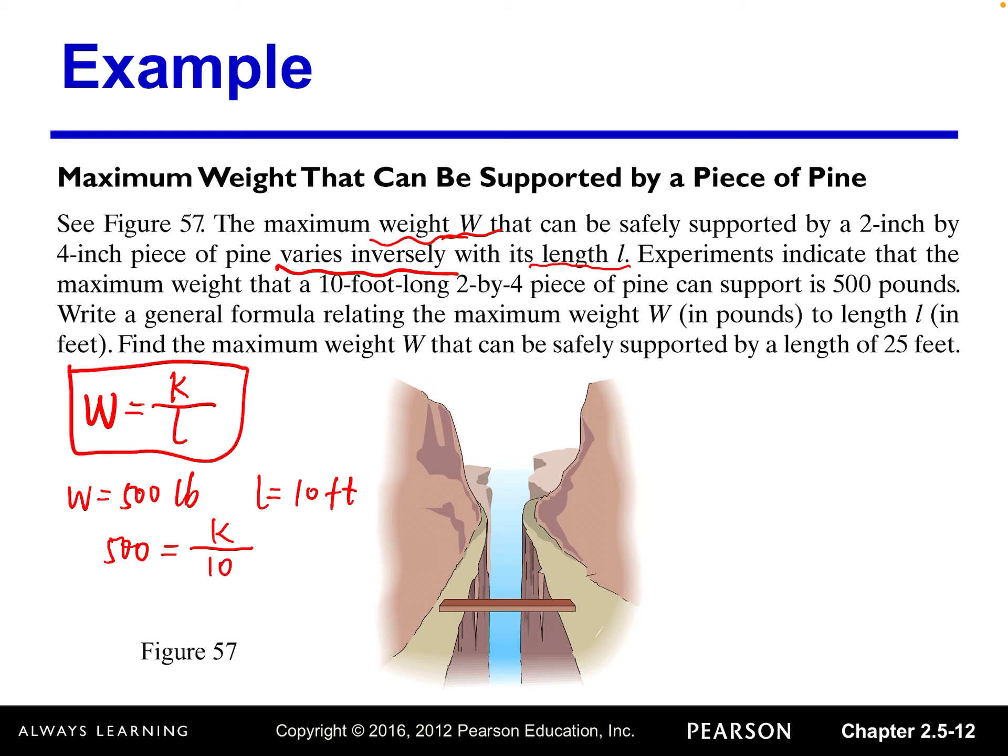So now we want to solve for k, the inverse variation coefficient. So k equals 500 multiplied by 10, we got 5,000. So now we can update our formula. We have w equals 5,000 divided by l. So we're done writing a general formula relating maximum weight w to length l.